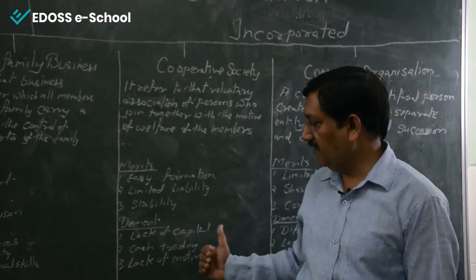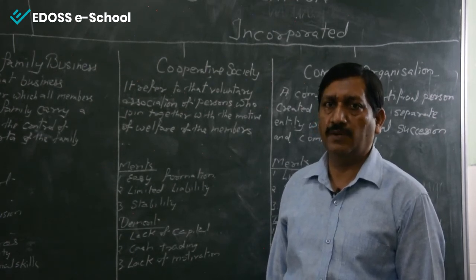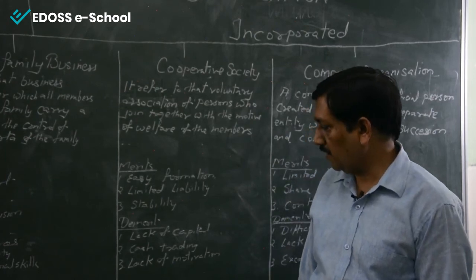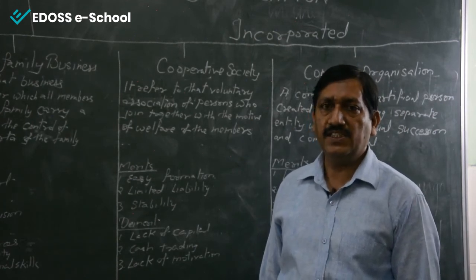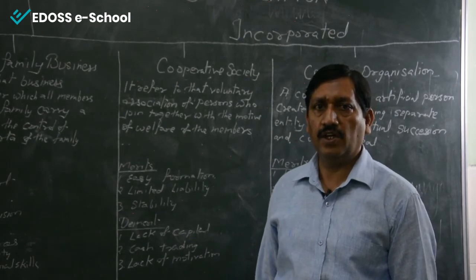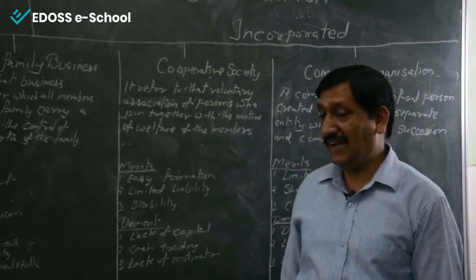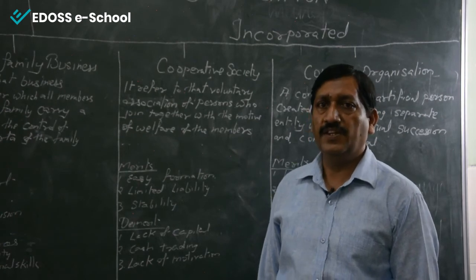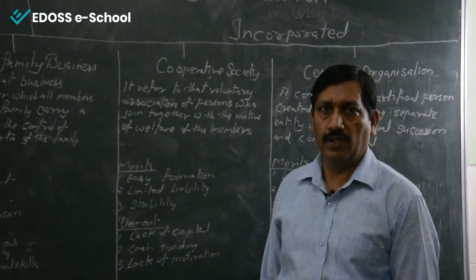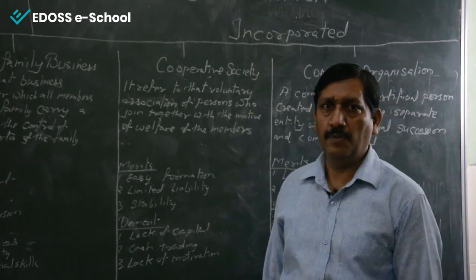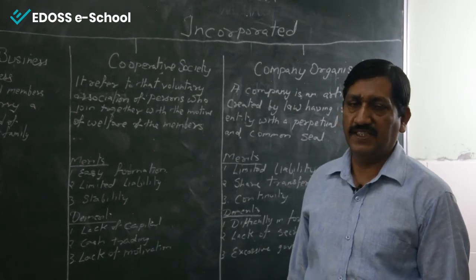Demerits of cooperative society: Lack of capital — for capital they depend on the government and whatever the members can invest. Cash trading is also a problem — all work is done on a cash basis only, but since poor people are also members, they sometimes cannot afford to buy goods on cash basis. Lack of motivation — since members are not getting profit directly, they are not motivated to work harder and treat it as part-time work only.